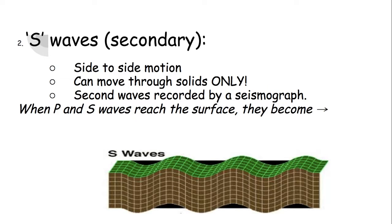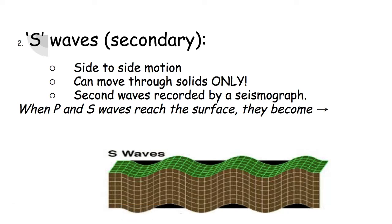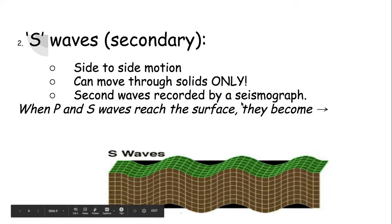Our next wave is the secondary wave — S for secondary because it comes in second place; it's a slower wave. This is a side-to-side motion. Instead of being pushed and pulled in the same direction the wave is moving, it goes perpendicular — down and up while the wave still travels forward. It's kind of like taking a jump rope and flicking your wrist up and down. S waves only move through solids, so they do not move through the outer core, and because they can't get through the outer core, they can't reach the inner core either. S waves are slower and reach the seismograph second.